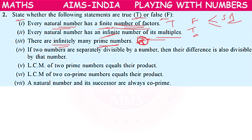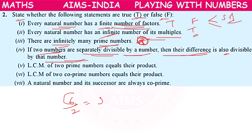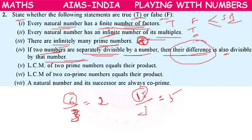If two numbers are separately divisible by a number, then their difference is also divisible by that number. For example, 6 is divisible by 3, and 15 is divisible by 3. Their difference is 15 − 6 = 9, and 9 is also divisible by 3. So this statement is true.